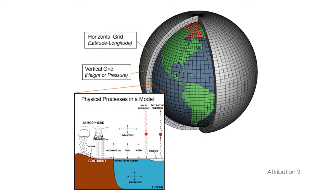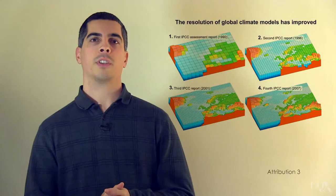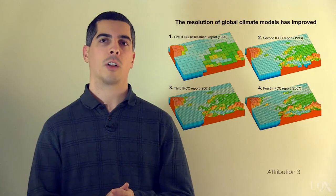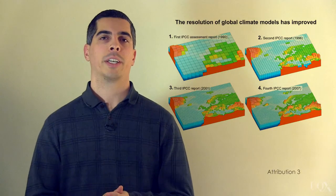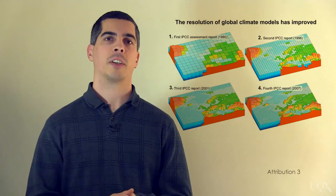They're mathematical representations of the Earth's climates. And to simulate the climate, they divide the Earth, its ocean, and atmosphere into a three-dimensional grid. Factors like temperature, wind, and rainfall are calculated at each grid point to predict their future climate changes. As computing power has improved, the size of those grids has gotten smaller and smaller. Essentially, better computers allow us to make more and more detailed models.